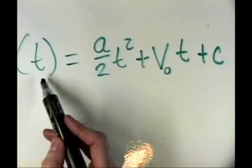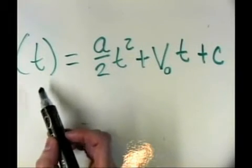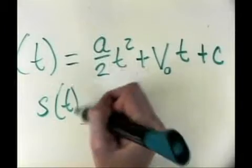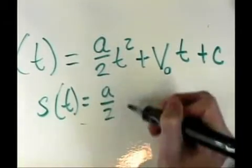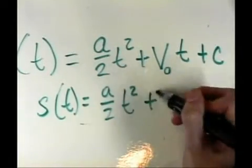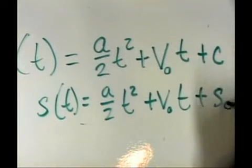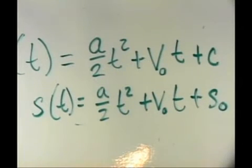If I plug in 0, I'll get the initial position. When you've seen this formula — S of T equals A over 2 times T squared, plus V-naught times T, plus S-naught — in physics, it came from this calculus.